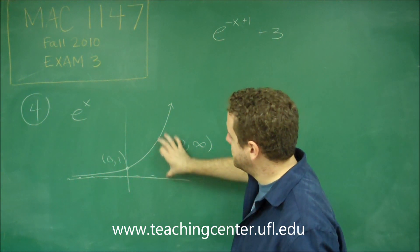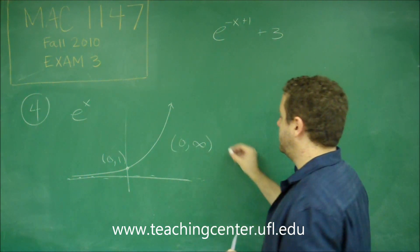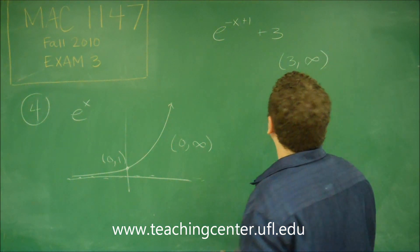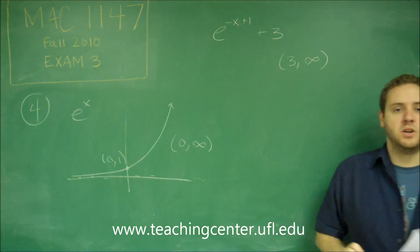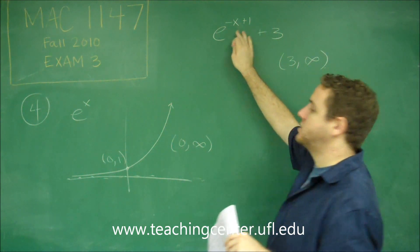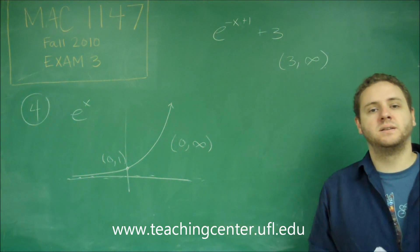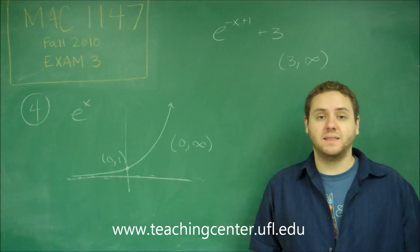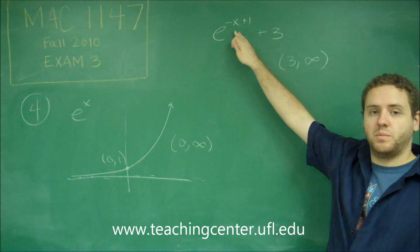What does change the range is this plus 3, because now you've just shifted the entire graph up 3, including this horizontal asymptote. So if this whole graph just moved up 3, then you're just going to have started at 3 and go to infinity for your range. So you don't need to consider what's going on here, because those only affect the possible x values.